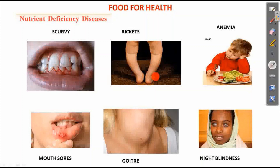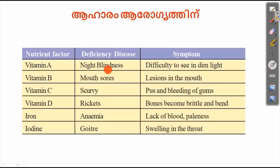This is anemia. Then rickets — the bones are weak. Scurvy causes pus and bleeding of gums. Vitamin D deficiency disease is rickets — bones become brittle and bent. Anemia causes lack of blood and paleness. Anemia is a deficiency disease. This is swelling in the throat.